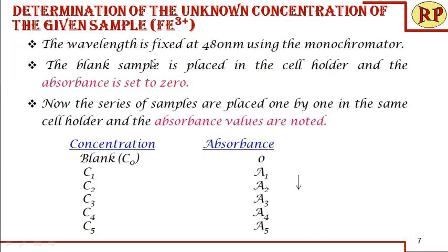Since we are analyzing ferric ions, the wavelength chosen should be 480 nanometers, because ferric thiocyanate absorbs at 480 nm. As discussed in our previous session, the wavelength chosen is the one at which the molar absorptivity epsilon is maximum: A = εcl, where epsilon is maximum. That wavelength is chosen so that the sample is most sensitive to it.